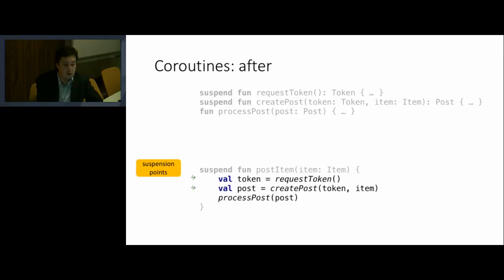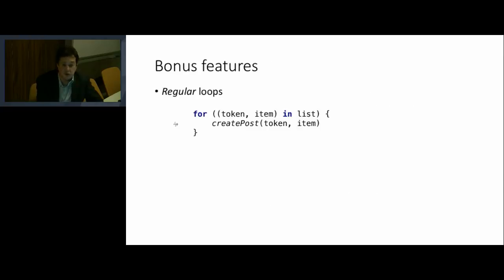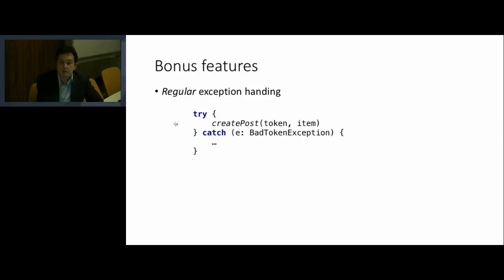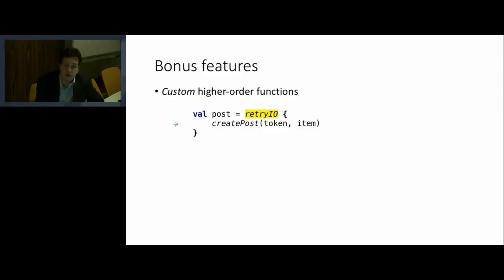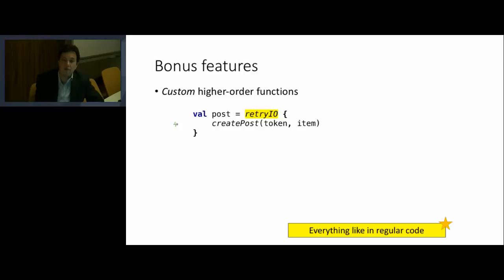With coroutines you get lots of bonus features. You can now write regular loops like you use in regular code — you don't have to learn a special operator to do a loop. You can do regular exception handling like you do in regular code, just with try-catch or whatever else. And better yet, you can use all the regular higher-order functions you love in Kotlin — you can do forEach, map, filter, and anything else. You can even write your own higher-order functions — for example, if you want to try a few times and retry on errors, you just write the higher-order function that does it and apply it to your code.